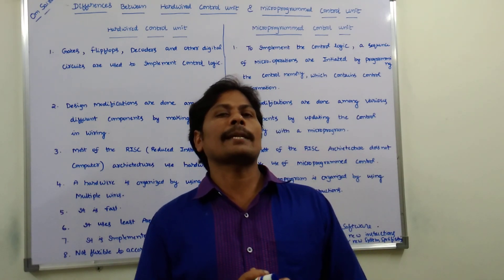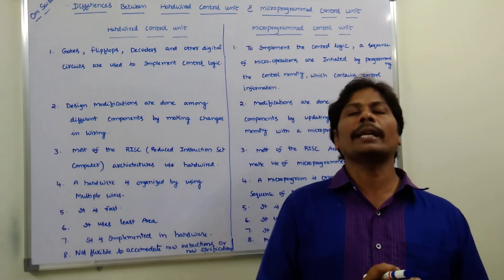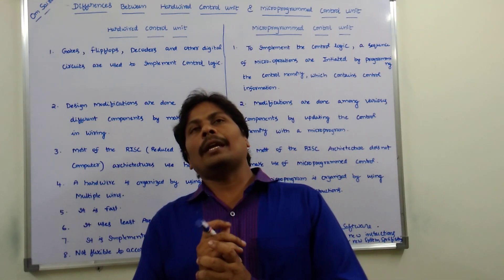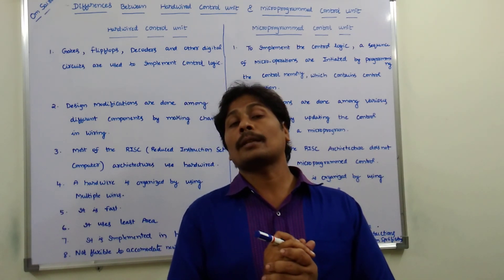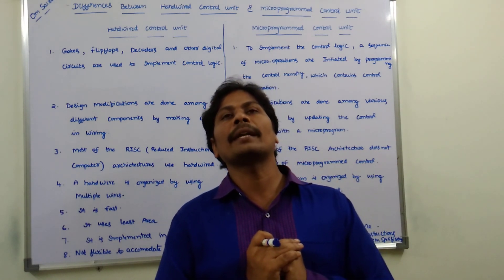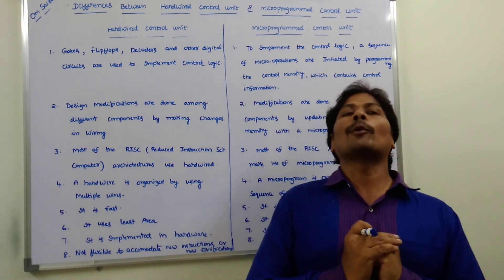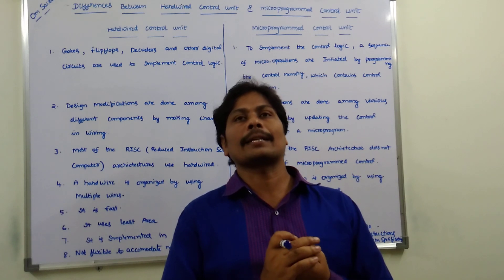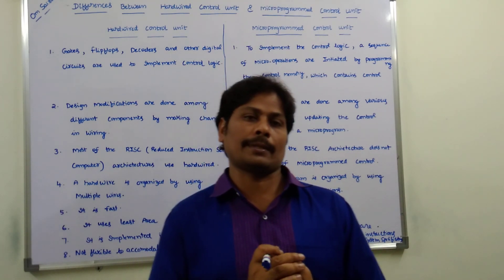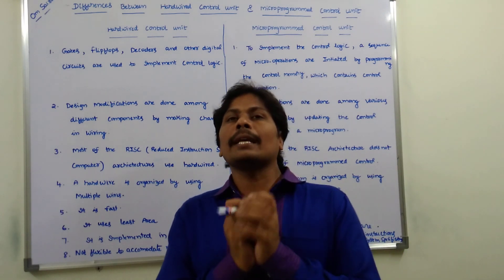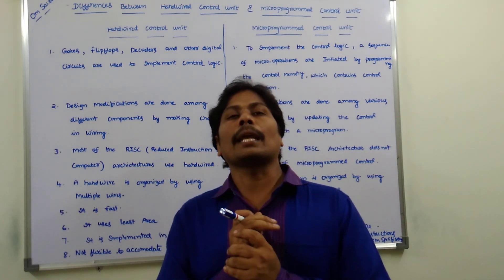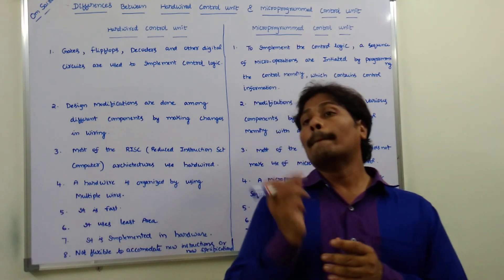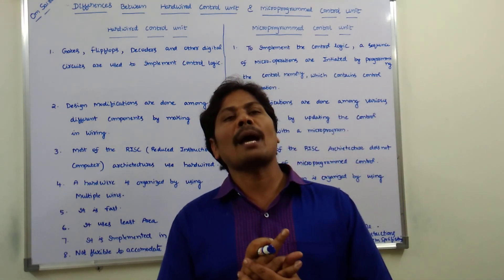The first point: in the hardwired control unit, the control logic is implemented by different components such as logic gates, decoders, multiplexers, and other digital circuits. By using these components, we can implement the control logic in a hardwired control unit.